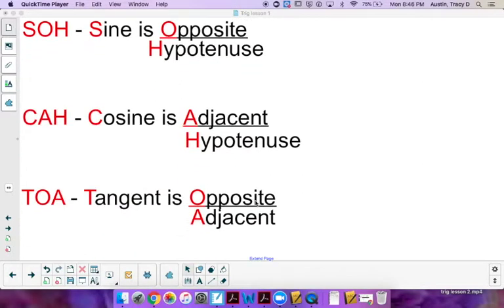And TOA, tangent, is the side opposite the angle divided by the side adjacent to the angle.